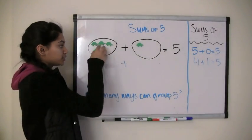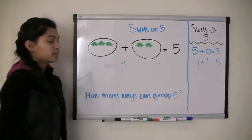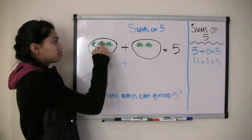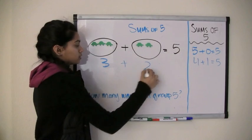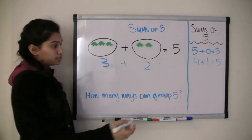If we move another turtle over, now we have one, two, three turtles plus one, two turtles. So two plus three equals five.